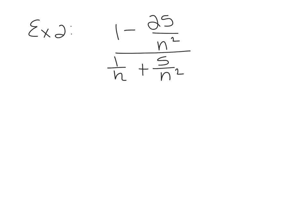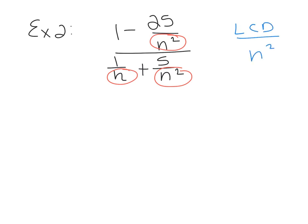Example 2, still on page 156: 1 minus 25 over N squared, all over 1/N plus 5 over N squared. We start the same way by looking at the denominators. There are only three this time because there's no denominator on the 1 — or in other words, the denominator is 1. The least common multiple for these denominators is N squared. We'll multiply top and bottom by N squared over 1.